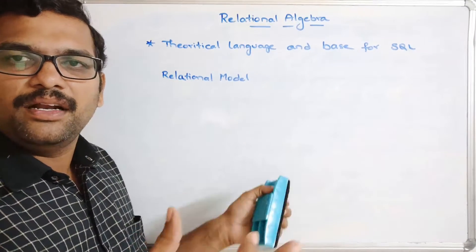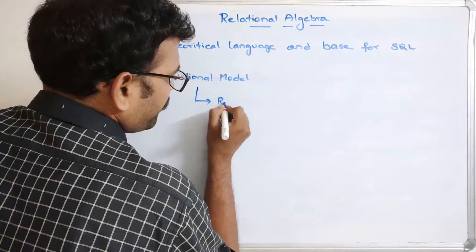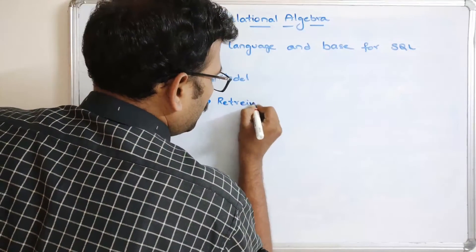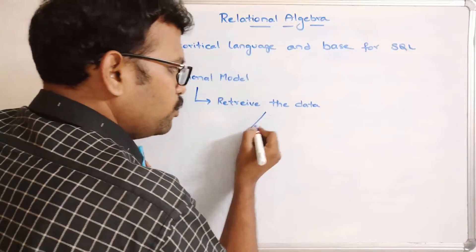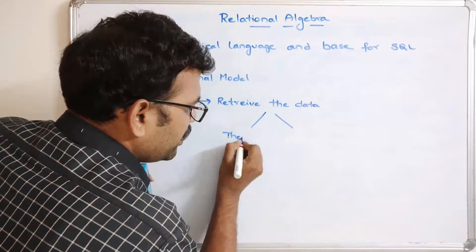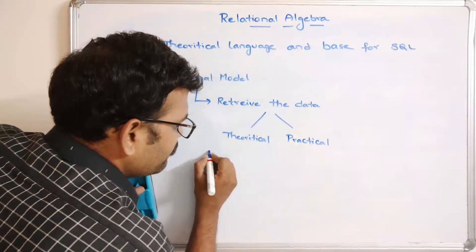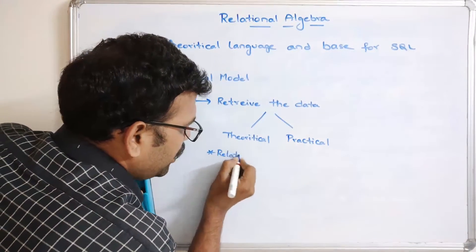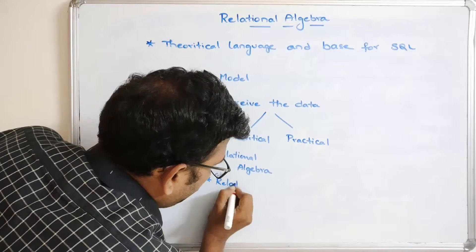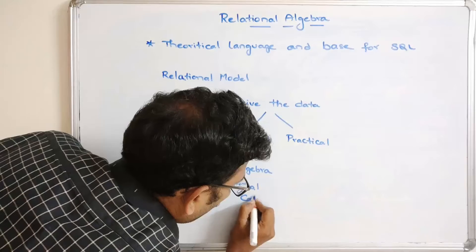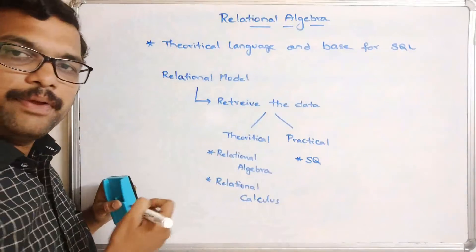In the relational model, data is represented in the form of tables — that is, relations. In order to retrieve data, it requires two different types of languages: one is theoretical and the other is practical. The theoretical languages are relational algebra and relational calculus, while the practical programming language is SQL.